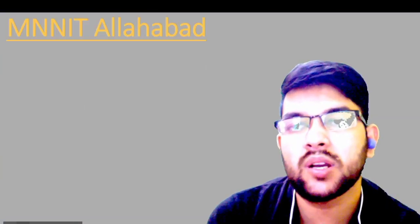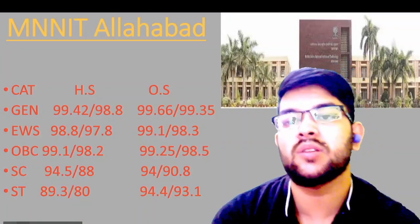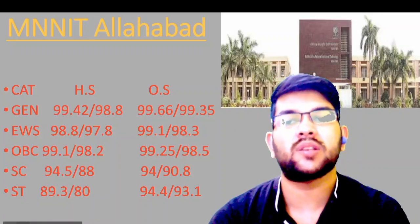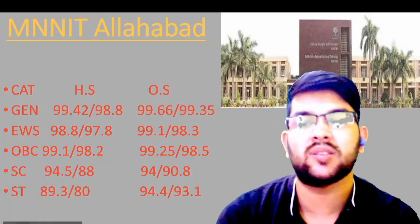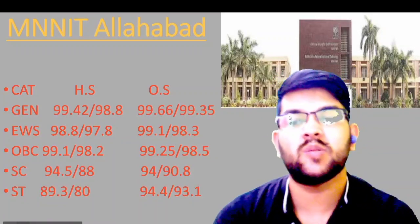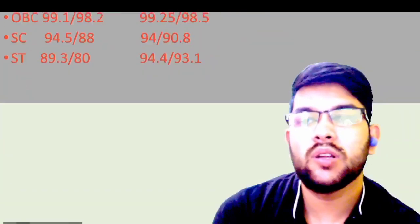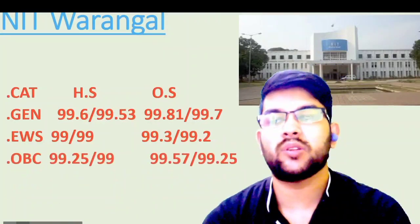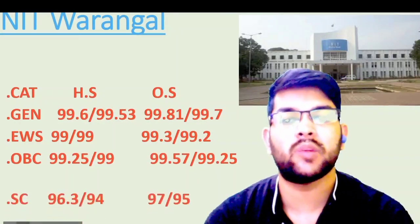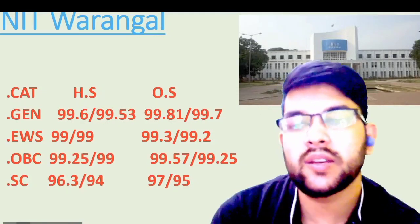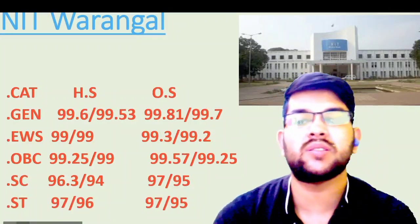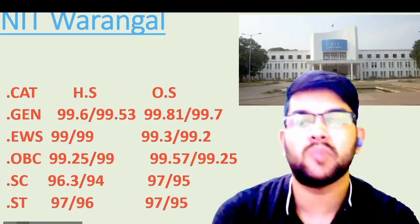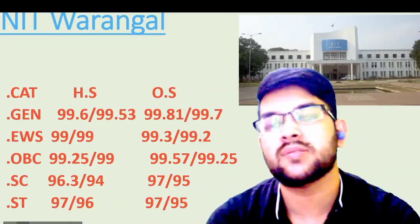Next is NIT Warangal. Here is the information. For general: 99.42 and 99.66. For EWS, OBC, SC, and ST, you can check sideways — everything has been mentioned. For general (another tier): 99.6 and 99.81. For EWS: 99 and 99.3. For OBC: 99.25 and 99.57. For SC: 96.3 and 97. For ST: 97 and 97 — that is for home state male candidates; for female, check after the slash.